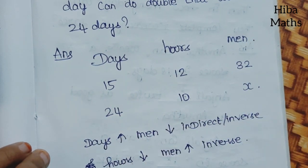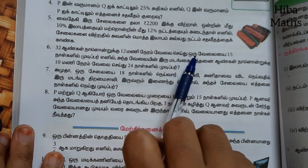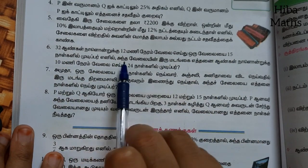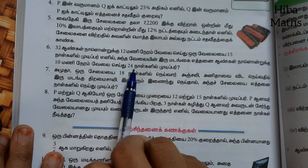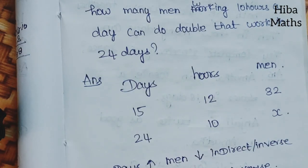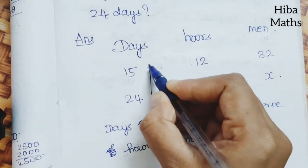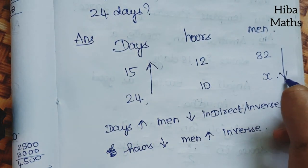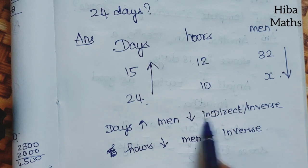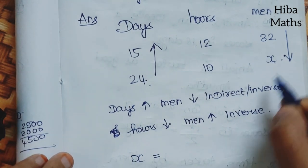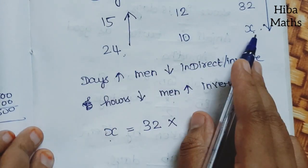Let's compare the days and men. We identify the relationship: days and men are in indirect or inverse proportion. What is the unknown factor? X is the first one. Indirect is the same.